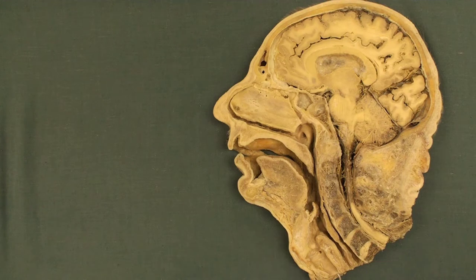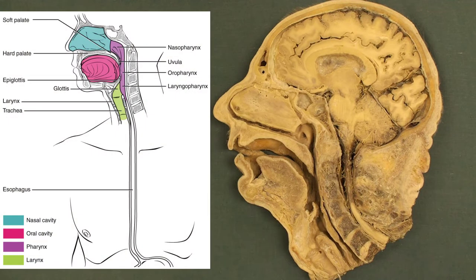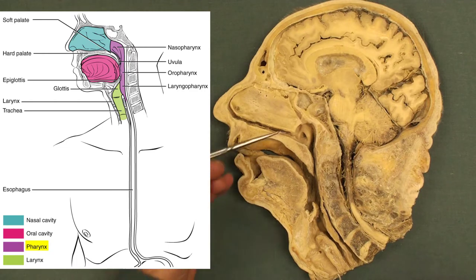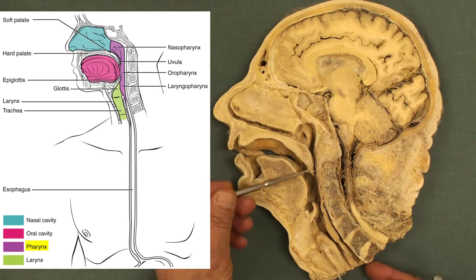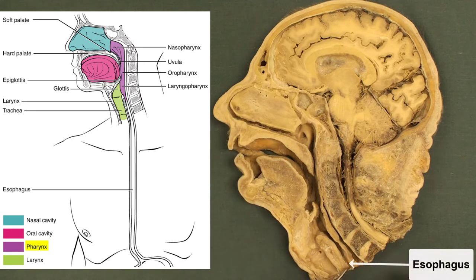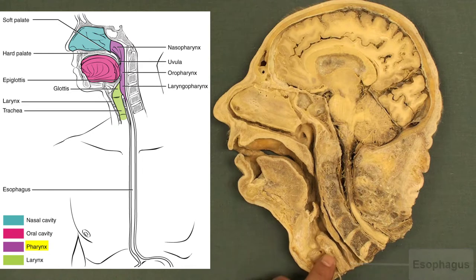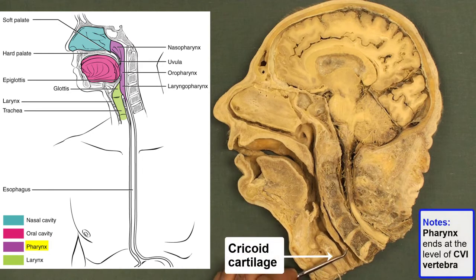In this shot, we want to walk you through the anatomy of the pharynx. The pharynx is a muscular tube that starts from the base of the skull and ends at the esophagus right there, which is almost at the level of the cricoid cartilage, one of the cartilages of the larynx.